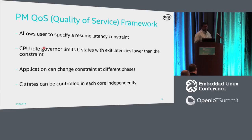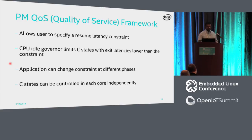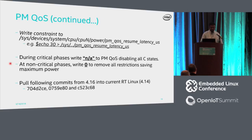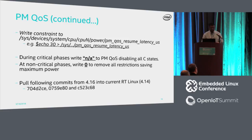The advantage of this method is that applications can change constraints dynamically at different phases — you can enable all C-states, disable all C-states completely, or fine-tune them. It also gives the option to control per core — turning off C-states on some cores while keeping them on others. The PM QoS interface can be applied system-wide or per core. This is the user space per-core interface using the PM QoS resume latency microseconds attribute.